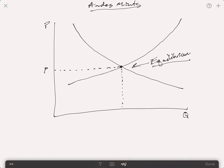And we have our p-prime and our q-prime, which is just the price and quantity demanded at that price.